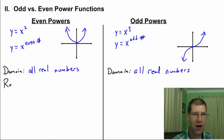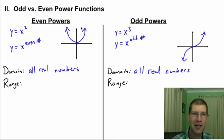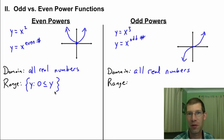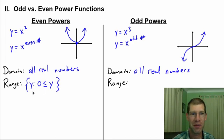The range is the set of all possible values for y — and this is where the two types differ. For even power functions, the graph sits at or above the origin, so the range is y such that y is greater than or equal to zero — all non-negative real numbers. For odd power functions, the range includes zero, all positives, and all negatives, so the range is all real numbers.